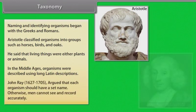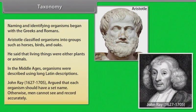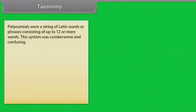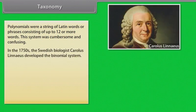John Ray (1627–1705) argued that each organism should have a set name, otherwise men cannot see and record accurately. Polynomials were a string of Latin words and phrases consisting of up to 12 or more words. This system was cumbersome and confusing. In the 1750s, the Swedish biologist Carlos Linnaeus developed the binomial system.